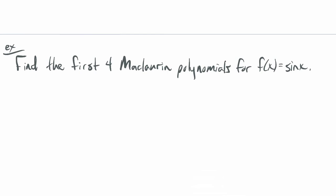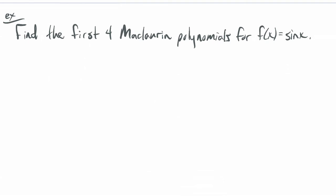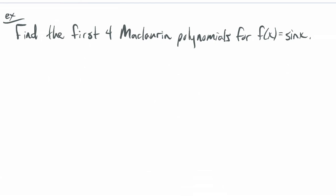Now let's find the first four McLaurin polynomials for sine of x. Since these are McLaurin polynomials, we're using a equals 0, so we'll have x, x squared, x cubed — no need for foiling. That was pretty tedious in the last example.